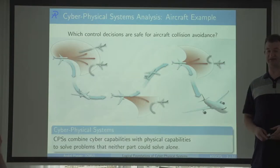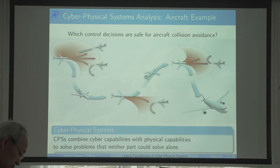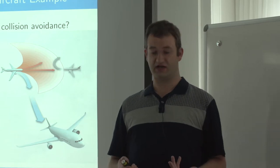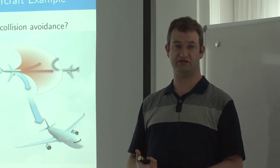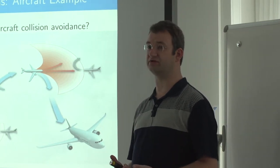The logical foundations of cyber-physical systems — what does that mean to me? It means basically the question: which control decisions are safe? For example, for aircraft collision avoidance. If you are the pilot or if you build the computer for the plane, and the pilot got into a tight spot with other aircraft, it would be brilliant if we had a way of saying that certain red trajectories are probably not a good idea because they get too close to where the other aircraft will be heading, but a sharp right turn in blue is a great idea.